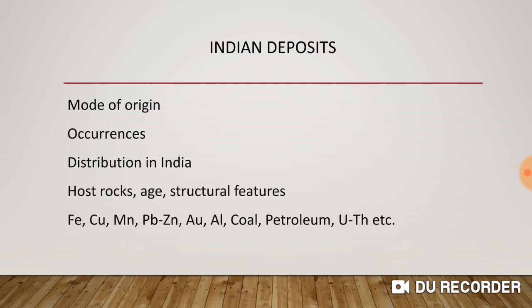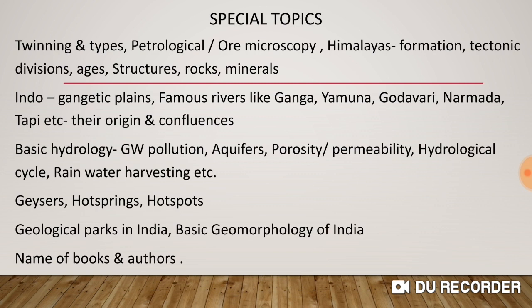Cover geochemical and geophysical methods of prospecting and exploration — geochemical surveying, soil surveys, stream sediment surveys — and geological, geochemical, geophysical, and thematic mapping. Know the differences between geological and geochemical mapping. For Indian mineral deposits, prepare iron, copper, manganese, lead-zinc, gold, aluminium, coal, petroleum, uranium, and thorium — their mode of origin, occurrences, distribution in India, host rocks, and structural features.